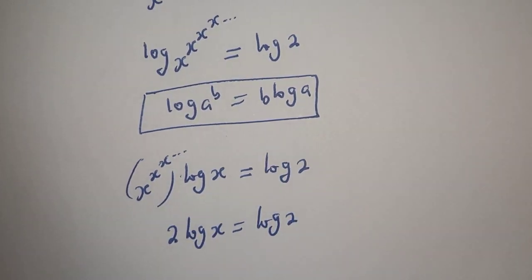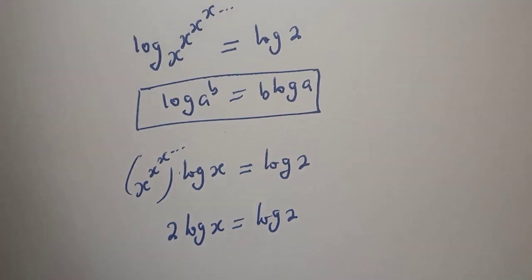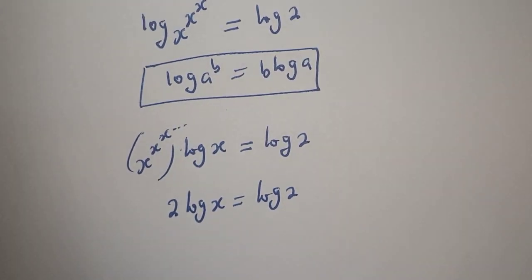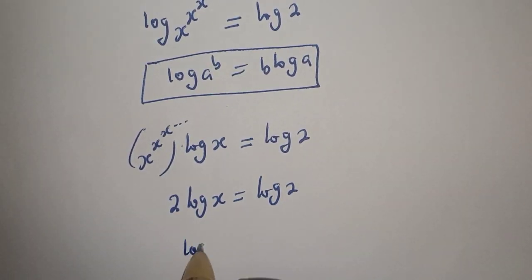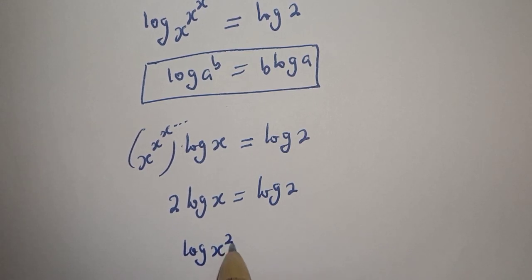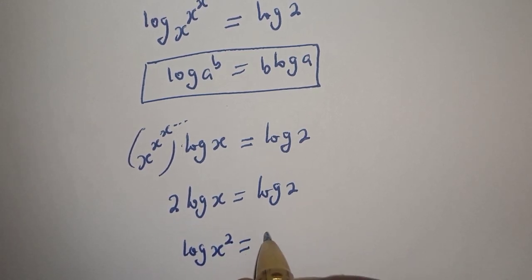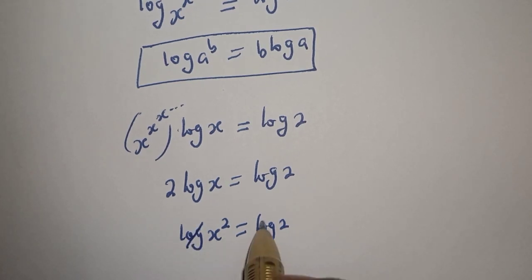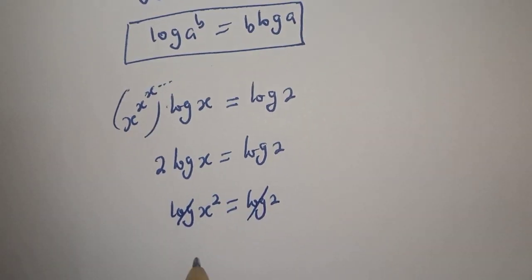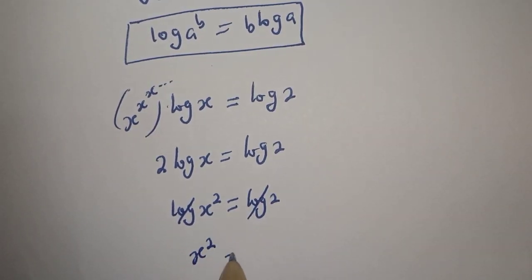We have 2·log(s) = log(2). This can be written as log(s²) = log(2). We can cancel the log on both sides, giving us s² = 2.